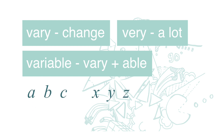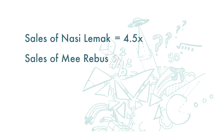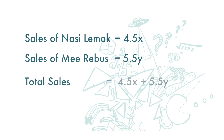Sales from nasi lemak is 4.5x. Now let's say beside nasi lemak you also sell mee rebus. A plate of mee rebus is five ringgit fifty cents. If we use y to represent the number of plates of mee rebus sold, then the sales of mee rebus is 5.5y, and your total sales for the day is 4.5x plus 5.5y.